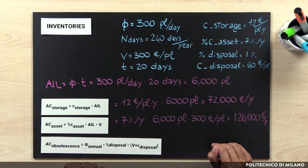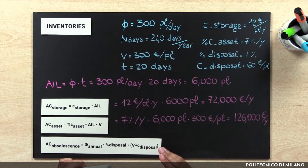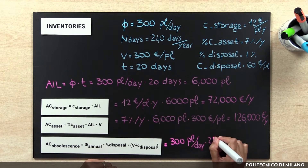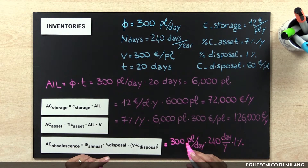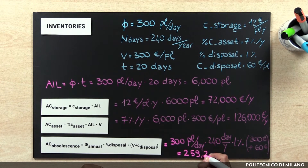As for the annual cost of obsolescence, we need to consider that we lose all the expired goods and also have additional disposal costs. The annual cost of obsolescence equals the value of the expired goods plus the cost of disposal: 300 pallet loads per day multiplied by 240 days per year, multiplied by the percentage of disposal of 1%, multiplied by the value plus disposal cost of 300 euros plus 60 euros per pallet load. So we have 259,200 euros per year.